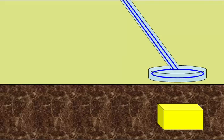Here we have a simple diagram of a metal detector. We have the wires coming down the handle to a coil in the base. Here we have a piece of metal buried somewhere beneath the ground.